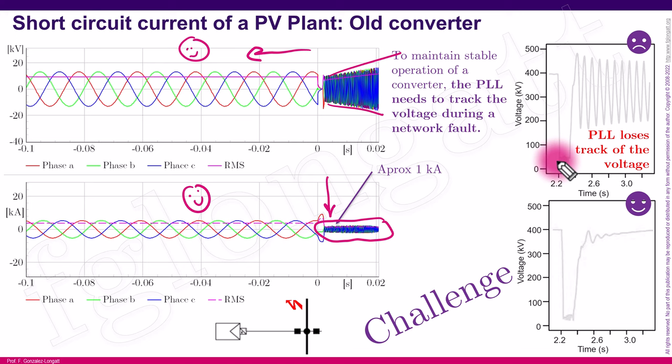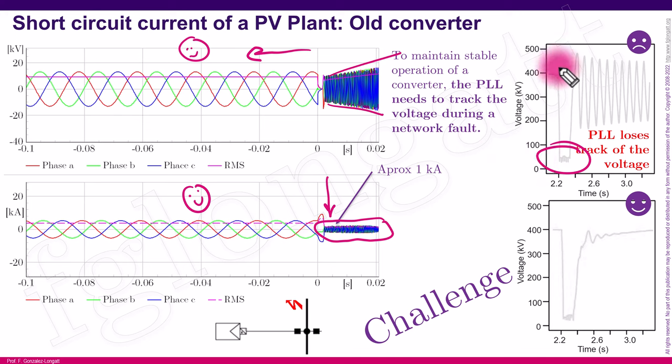For that reason, those devices have very low short circuit contribution. When using the traditional grid-following scheme with a PLL as the synchronization mechanism, during a short circuit we have a sudden voltage reduction. Depending on the short circuit ratio, we can have a problem where the voltage starts to oscillate after the short circuit is removed — an important operational challenge.